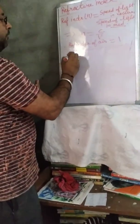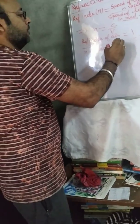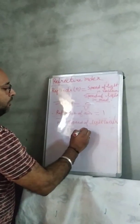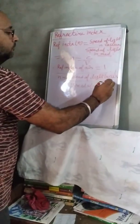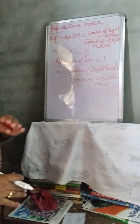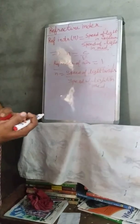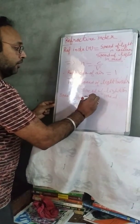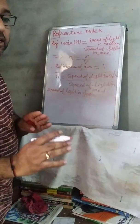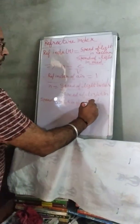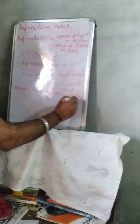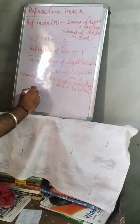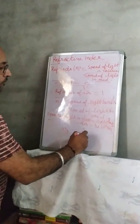So I can calculate other refractive indices: n is equal to speed of light in air divided by speed of light in medium. For example, the speed of light in glass — when a ray of light travels through glass, the speed of light is equal to 2 × 10⁸ meter per second. And the speed of light in air we know is 3 × 10⁸ meter per second. So the refractive index of glass will be equal to 3 divided by 2.